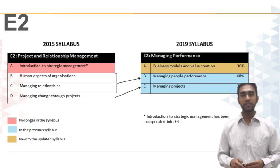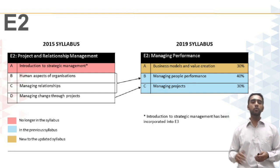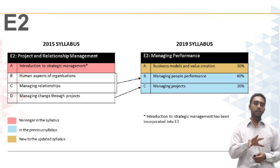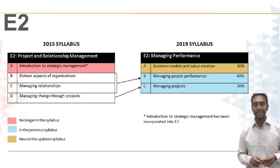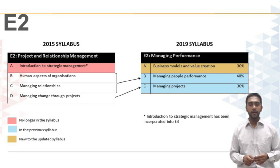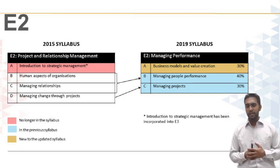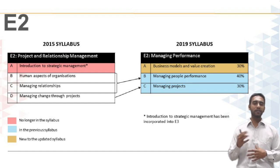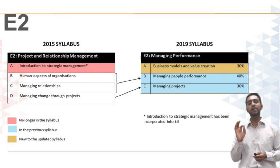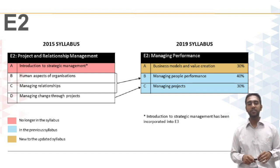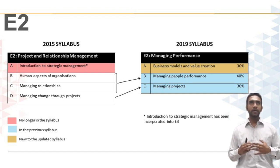What I'm going to do is run you through exactly what topics were there in the 2015 syllabus and compare it with what you've got in the 2019 syllabus. If you look at topic A, which is introduction to strategic management — where you learned about development strategy, the rational planning model and things like that — it has completely been moved out of the syllabus. It's been moved to E3 and is no longer part of E2.